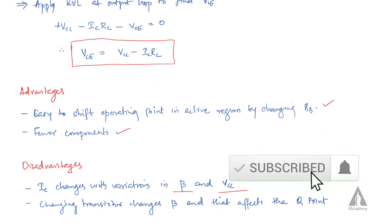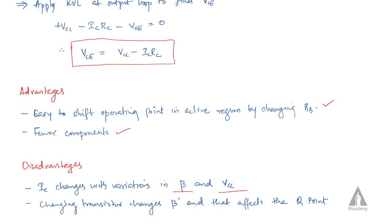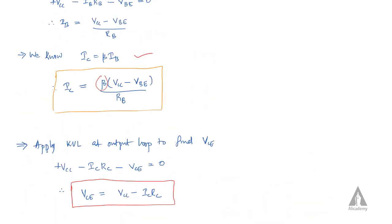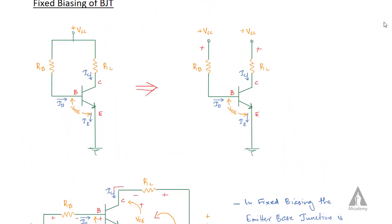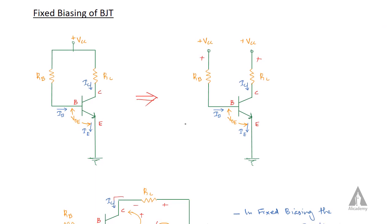A disadvantage of fixed biasing is that changing the transistor changes beta, and that in effect changes the Q-point. This is the biasing technique used in order to keep the transistor in active mode or in any other desired mode.